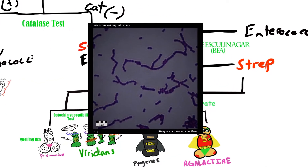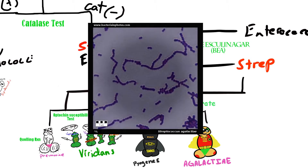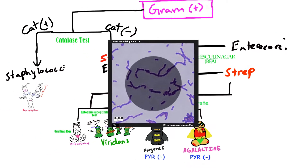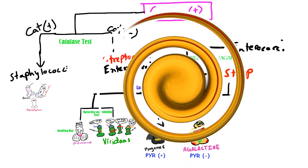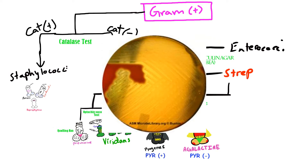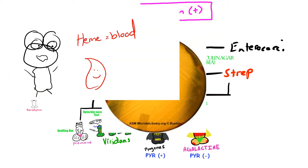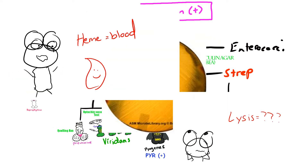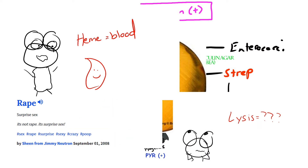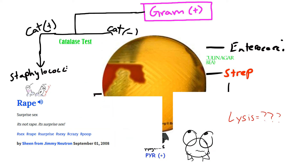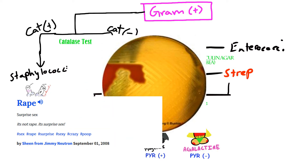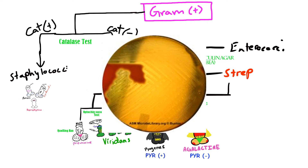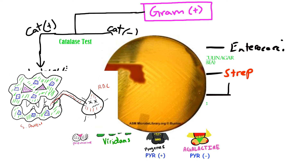Under the microscope, it looks like a chain of lancet-shaped diplococci — just a long line of balls. It's also beta-hemolytic, which means it has an enzyme called hemolysin — hemo for blood and lysis for destruction — resulting in complete lysis of RBCs, where all the red blood cells are lysed and their nutrients are consumed.